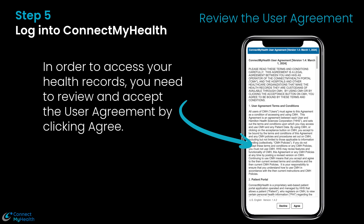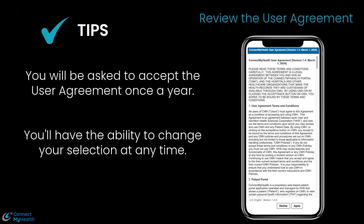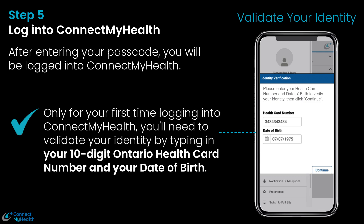Step 5: Log in to ConnectMyHealth. In order to access your health records, you need to review and accept the user agreement by clicking agree. If you decline the user agreement, you will be logged out of ConnectMyHealth. You will be asked to accept the user agreement once a year, and you'll have the ability to change your selection at any time. After entering your passcode, you will be logged in. Only for your first time logging in, you'll need to validate your identity by typing in your 10-digit Ontario health card number and your date of birth.